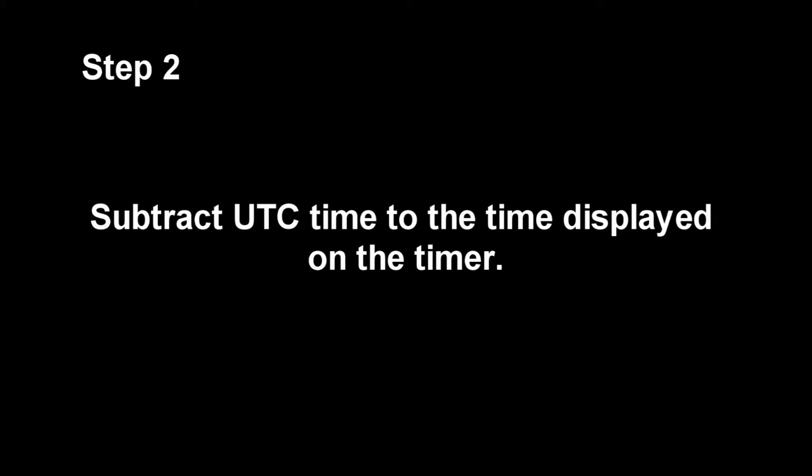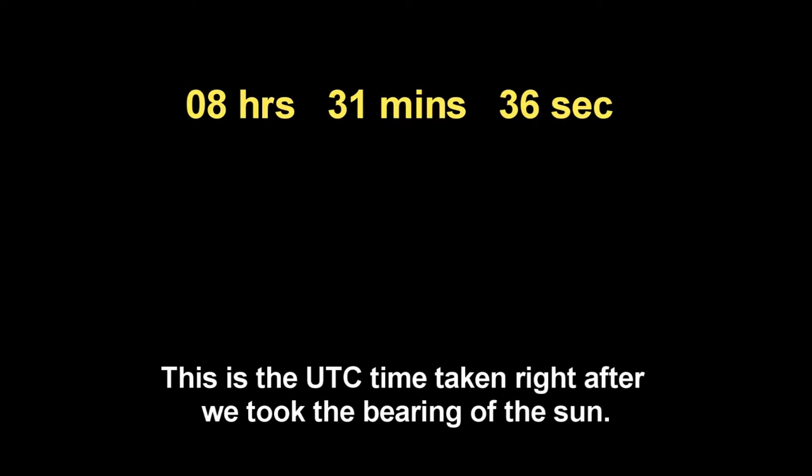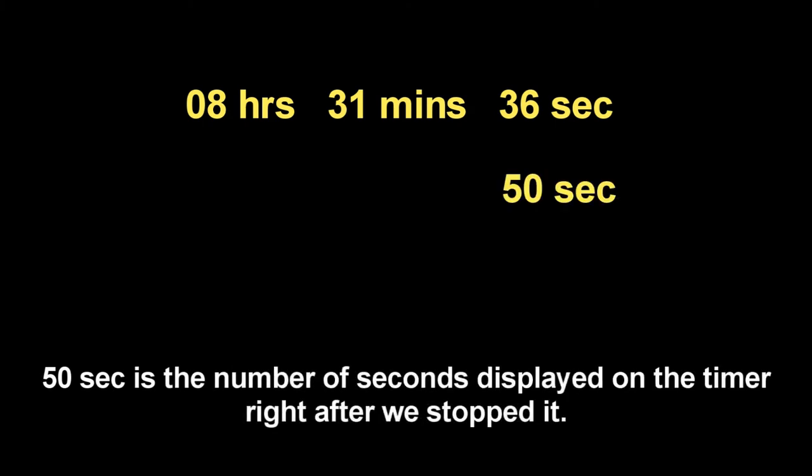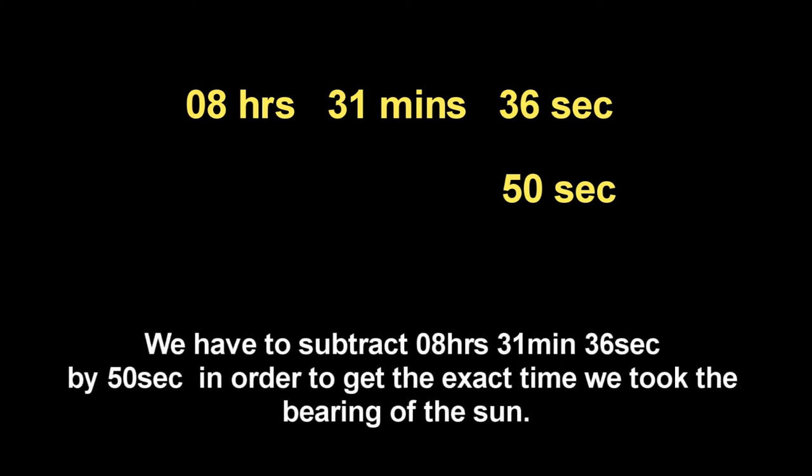Step 2: Subtract the UTC time by the time displayed on the timer. The UTC time taken right after we took the bearing of the sun is 08 hours, 31 minutes, and 36 seconds. The 50 seconds is the number of seconds displayed on the timer after we stopped it. We subtract 08:31:36 by 50 seconds to get the exact time we took the bearing of the sun. The answer is 08 hours, 30 minutes, and 46 seconds.